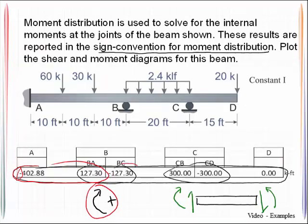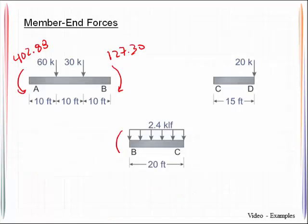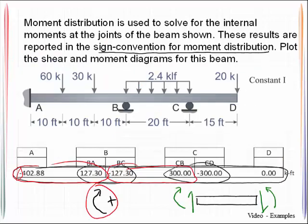Let's look at member BC. Negative 127.30 and 300. So negative 127.30 and 300. And to finish that up let's look at CD right here. Give me 300 there.